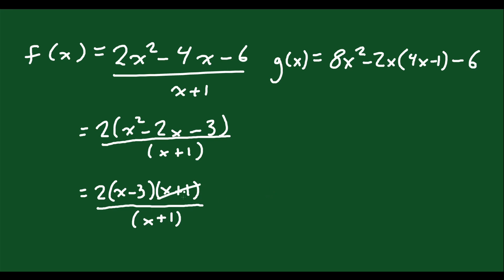And of course, the x plus 1s cancel, and you're just left with 2x minus 6. If you choose to expand that, or you can leave it factored as 2 times x minus 3, completely up to you.